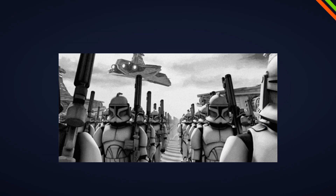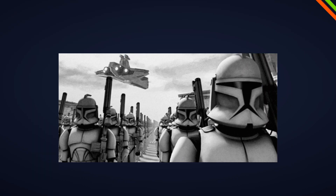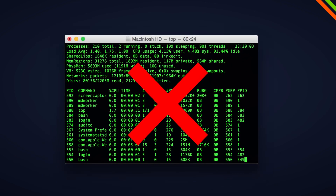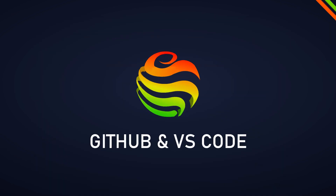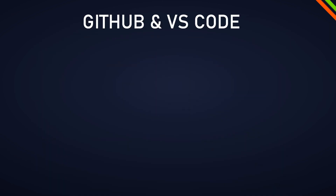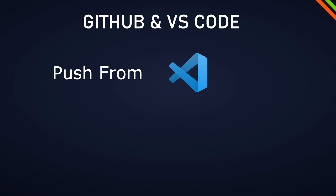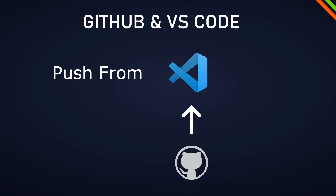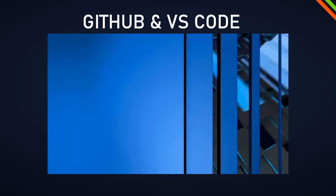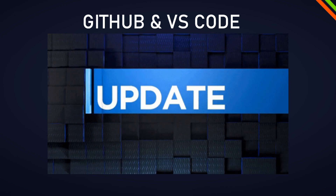Today I'm going to show you how to clone projects using GitHub with VS Code without using the terminal. In the last video I showed you how to push a project from VS Code to GitHub. In this video we're going to focus on how to add an existing GitHub project to VS Code and your local system, and how to update the files afterwards with just a couple of mouse clicks.